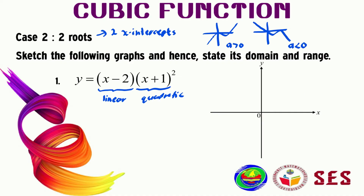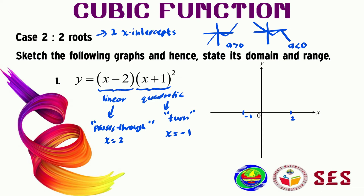When we have the linear part, the graph will pass through at x = 2. For the quadratic part, the graph will turn at x = −1. So we plot these two points: x = −1 somewhere here and x = 2 somewhere here, making sure the graph passes through x = 2 and turns at x = −1.